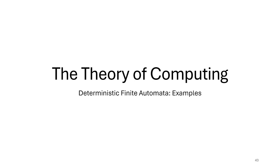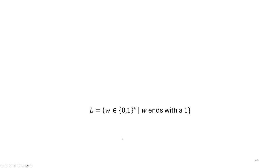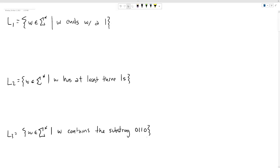In this video, I want to continue our discussion of deterministic finite automata by exploring a few languages that we can design deterministic finite automata for, to get a better understanding of their power. So let's look at our first example. We're going to try and build a deterministic finite automata for this particular language by thinking about these problems one at a time.